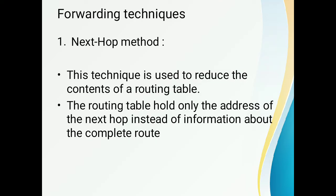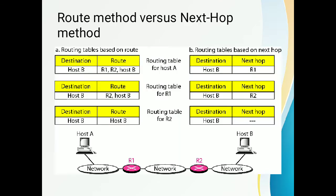There are three types of forwarding methods. First, the next hop method: this technique is used to reduce the contents of a routing table. The routing table holds only the address of the next hop instead of information about the complete route. The gateway or next hop is the destination address of the next network location that data packets will be transmitted to on their way to the destination IP address.